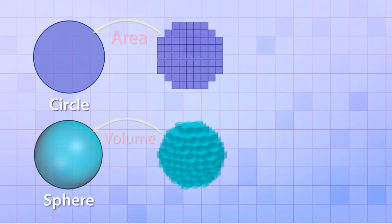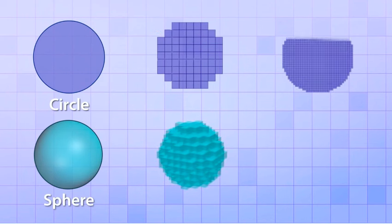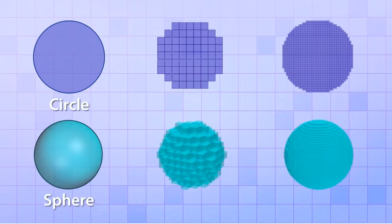And here's the really cool part. The smaller the squares you use, the closer their combined area will match the area of the circle. And the smaller the cubes you use, the closer their combined volume will match the volume of the sphere.